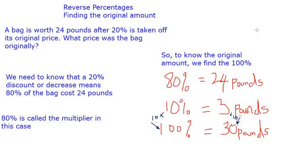So to know the original amount, we need to find the 100% because we should remember that 20% was taken off the whole, which is the 100%. So if 80% is 24 pounds, because remember you were told that 20% was taken off the whole price initially, it means that the new price is 80%. We need to find what the 100% is, which is the original price.